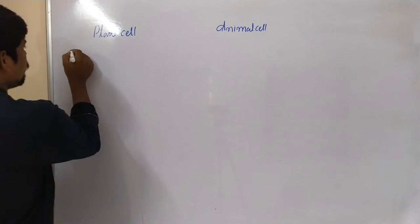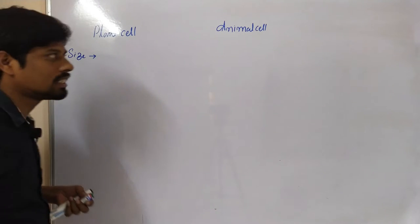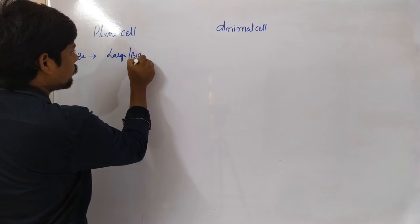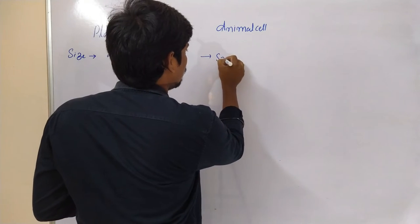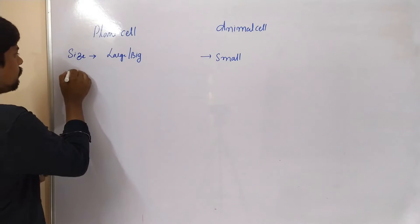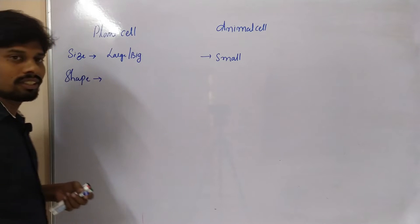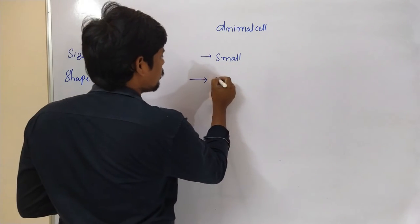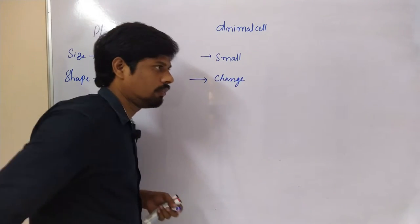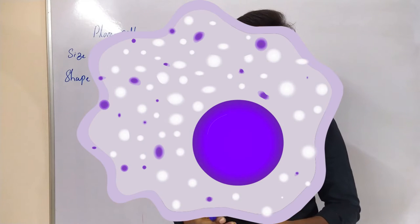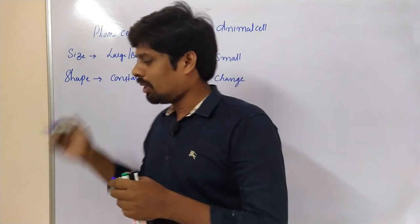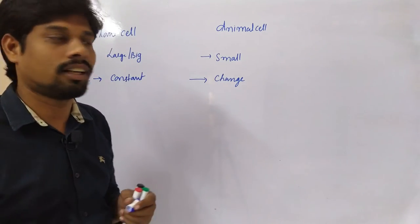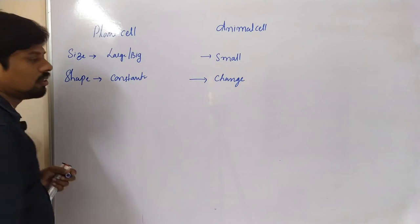Let us see the size of the plant cell and animal cell. The size of the plant cell is large whereas the animal cell is small in size. Coming to the shape — the shape of a plant cell is constant and cannot change. But in animal cells the shape can change. For example, WBC cells have different shapes in nature, which allows them to perform different functions like phagocytosis. So in plant cells there is no change in shape.